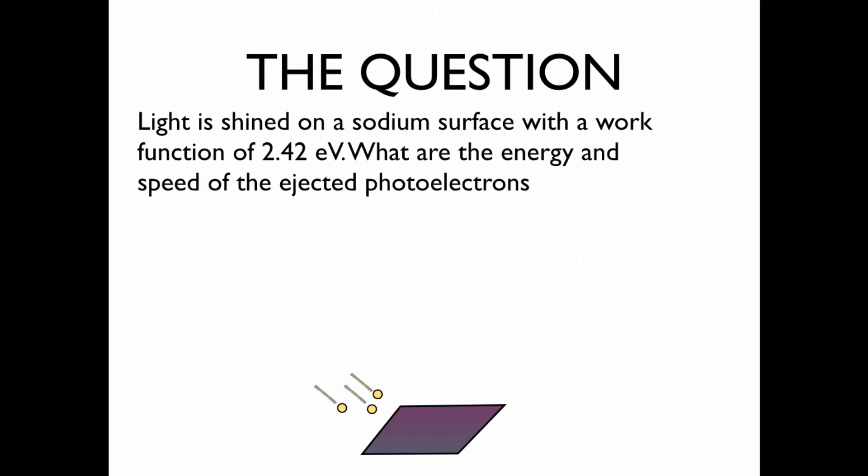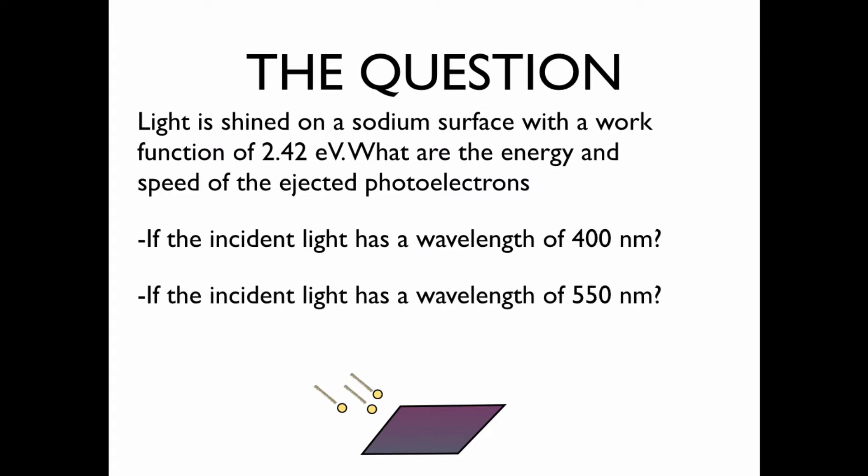The question. Light is shined on a sodium surface with a work function of 2.42 electron volts. Recall that the work function is the amount of energy needed to eject a single electron. We'd like to know what are the energy and speed of the ejected photoelectrons if the incident light has a wavelength of 400 nanometers and if the incident light has a wavelength of 550 nanometers.